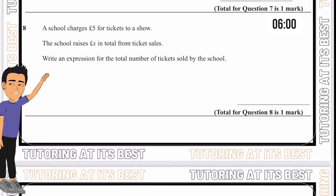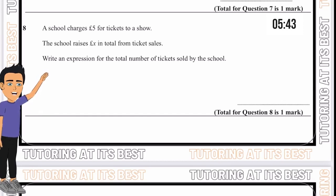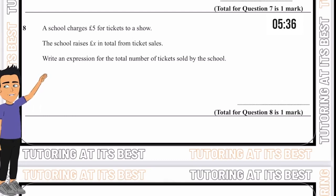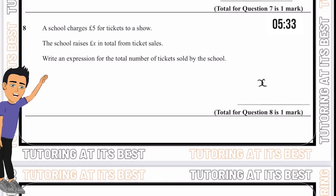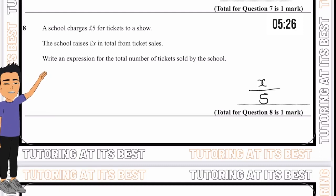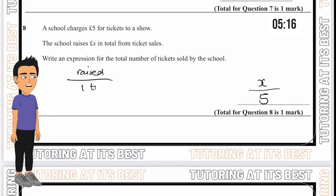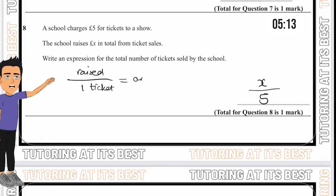Question 8. We're doing really well, let's keep it up. A school charges five pounds for tickets to a show and the school raises x pounds in total from ticket sales. Write an expression for the total number of tickets sold. For this question we need to do the inverse. We'll get the total number raised, which is x, and divide that by the price of one ticket, which is five. That allows us to find the total number of tickets sold.